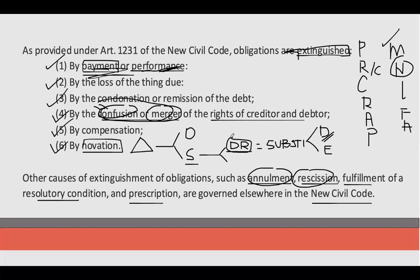Pero may mga instance din na even without the knowledge of the original debtor, meron nang nagbayad, meron nang sumalo nang utang na magbabayad doon sa utang. Ang tawag dyan class ay Expromission — without the knowledge or against the will of the original debtor, a third person binds himself to pay the debt of the original debtor. O yan, ang swerte naman. Magre-reklamo ka pa ba kung babayaran yung utang mo nang third person?